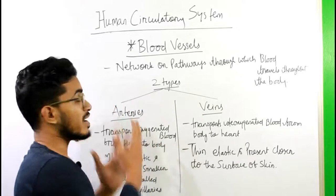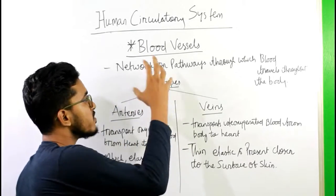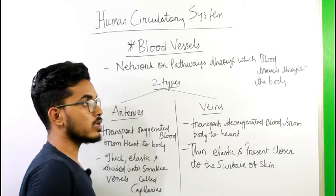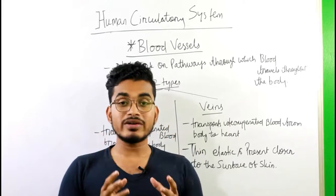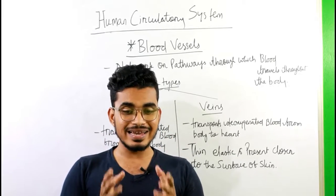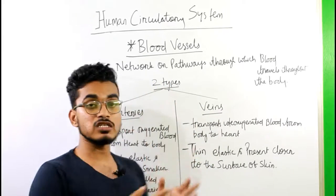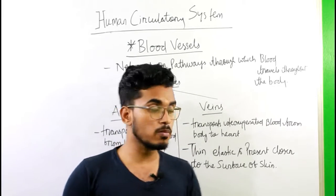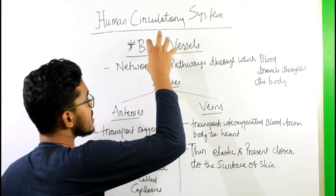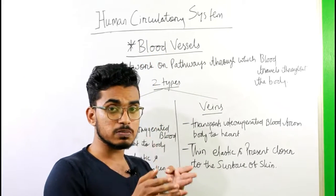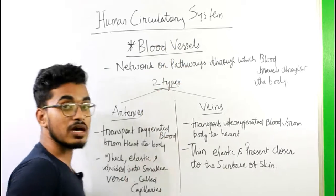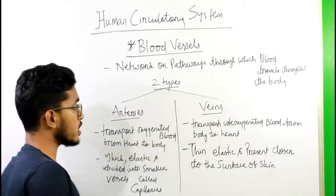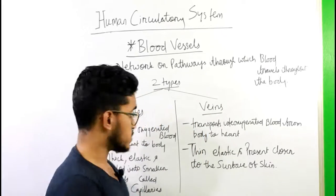Now let us talk about blood vessels. Blood vessels are the network or pathway through which blood travels throughout the body. For transportation of blood, it needs a pathway, and blood vessels provide that way to transfer blood from one part of the body to another. Blood vessels are of two types: arteries and veins.